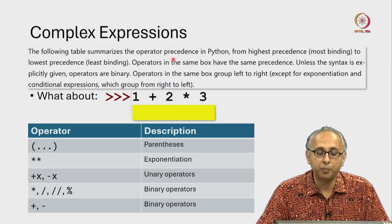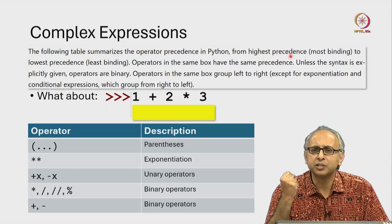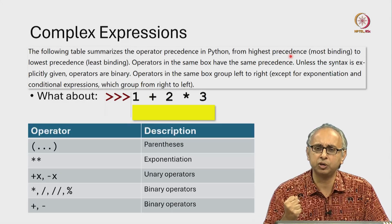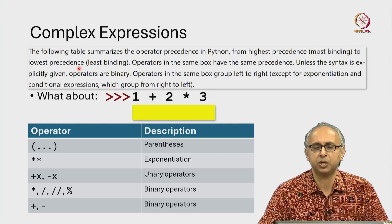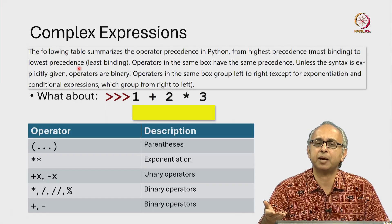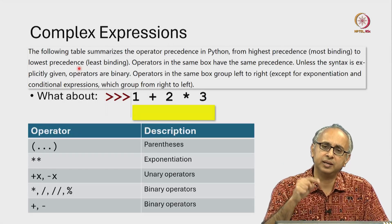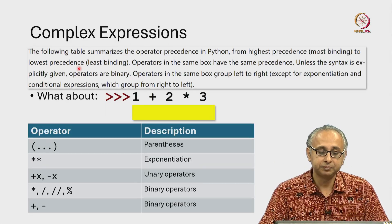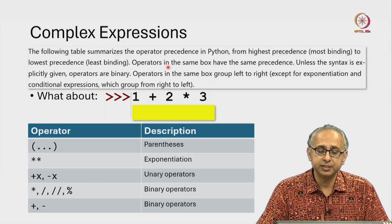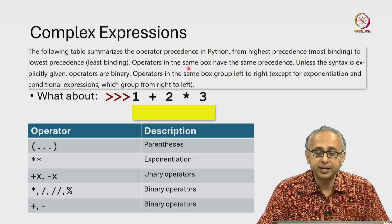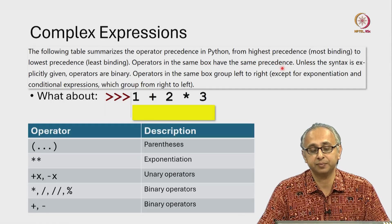So the table summarizes operator precedence from highest precedence which means the most binding or the strongest operation to the lowest precedence. So in our board maths rules for example, multiplication has higher precedence than addition but is that the case over here. So the table lists them from highest precedence to lowest precedence and operators in the same box have the same precedence.